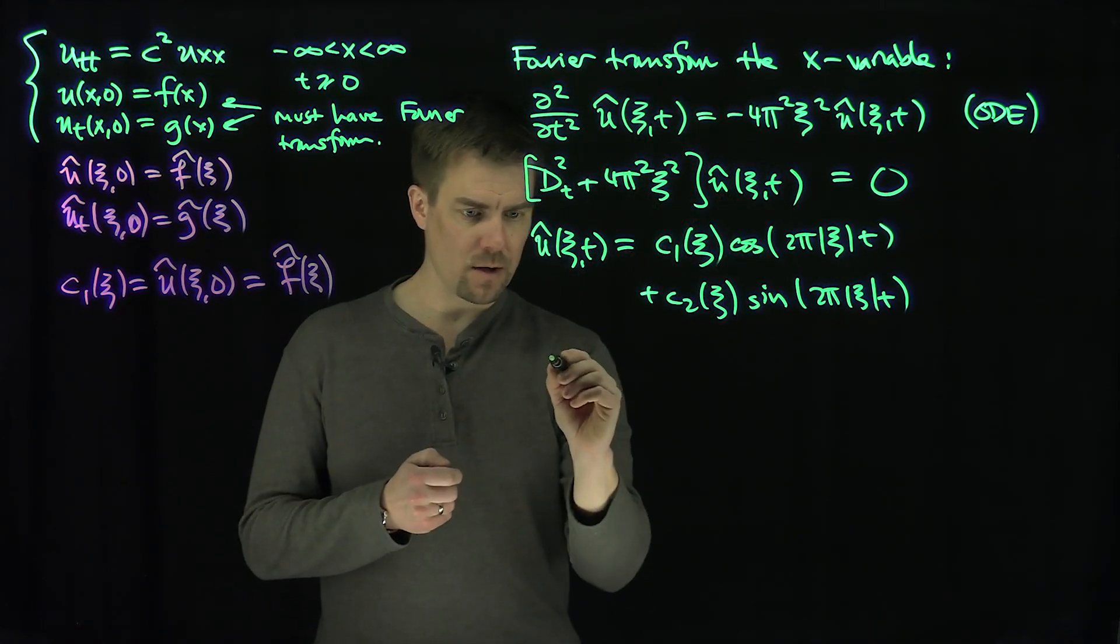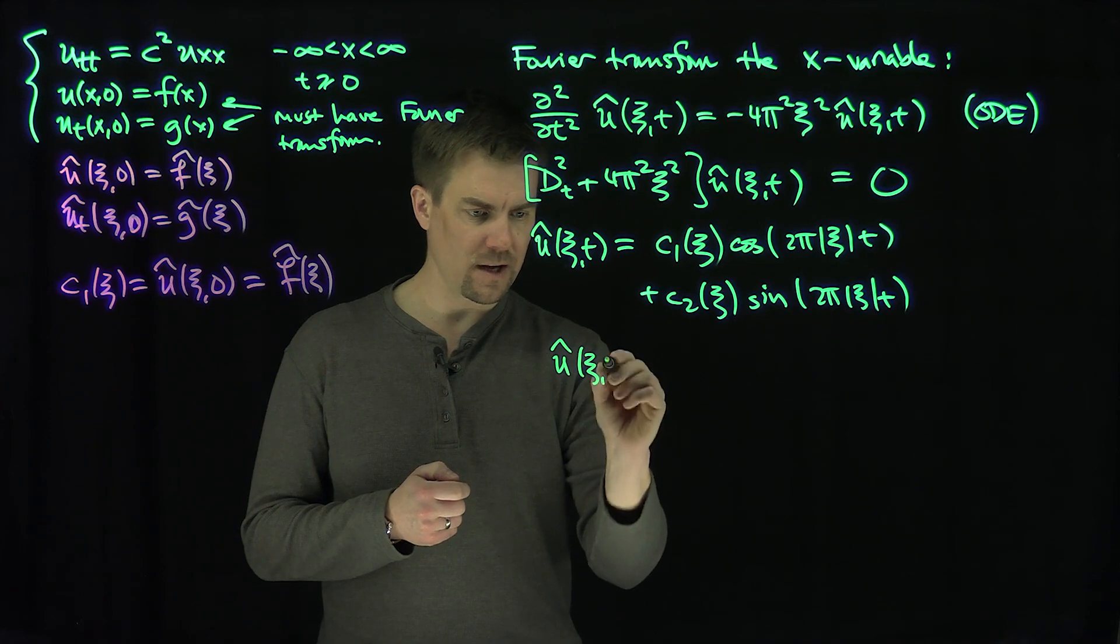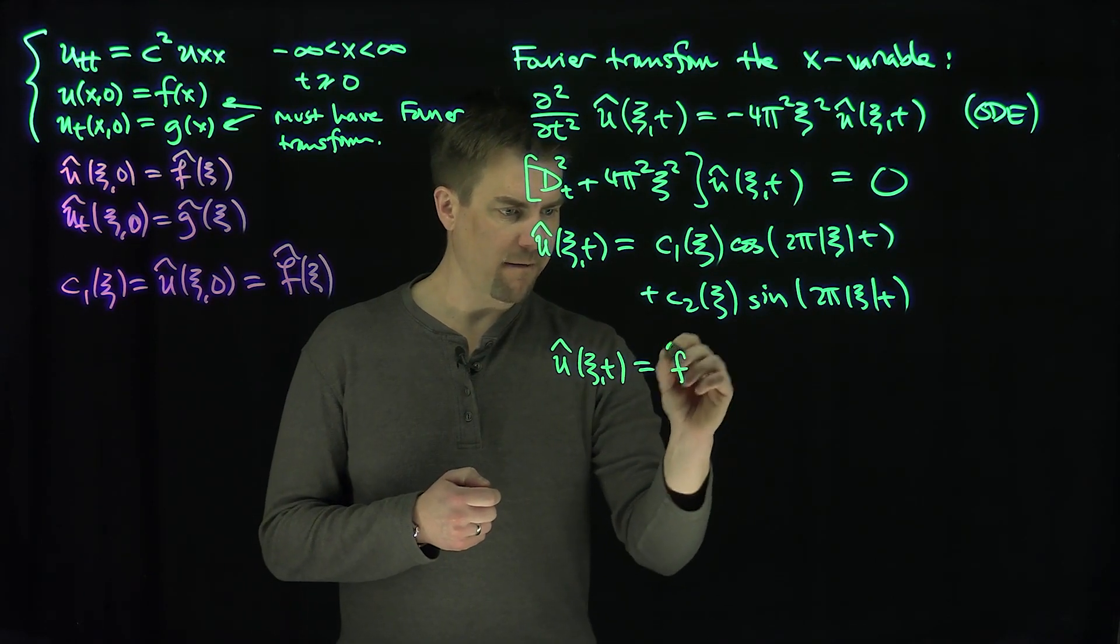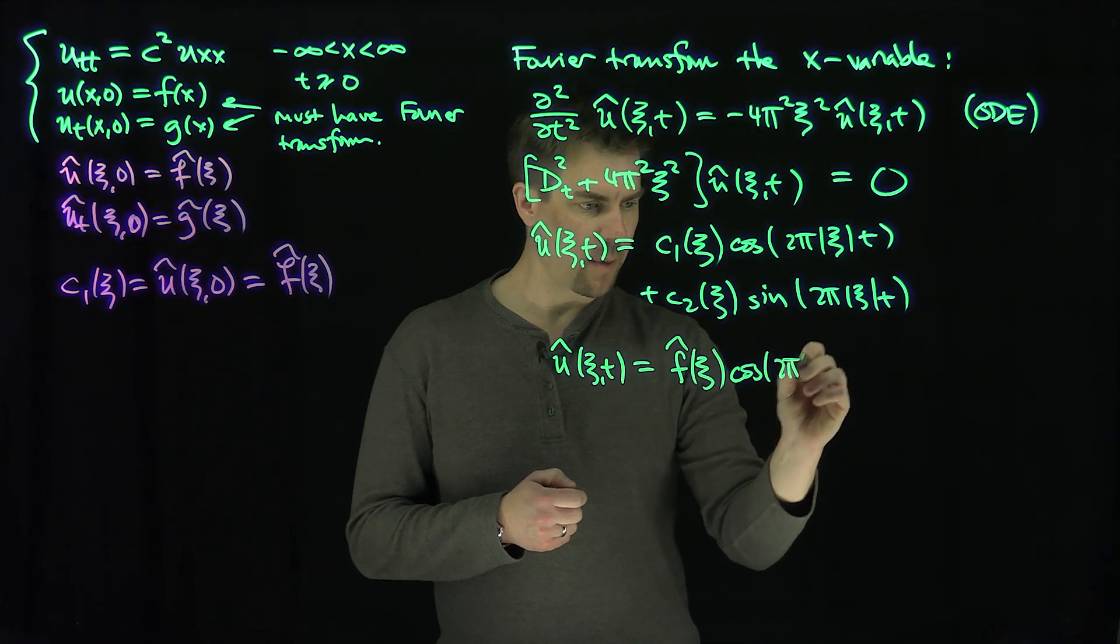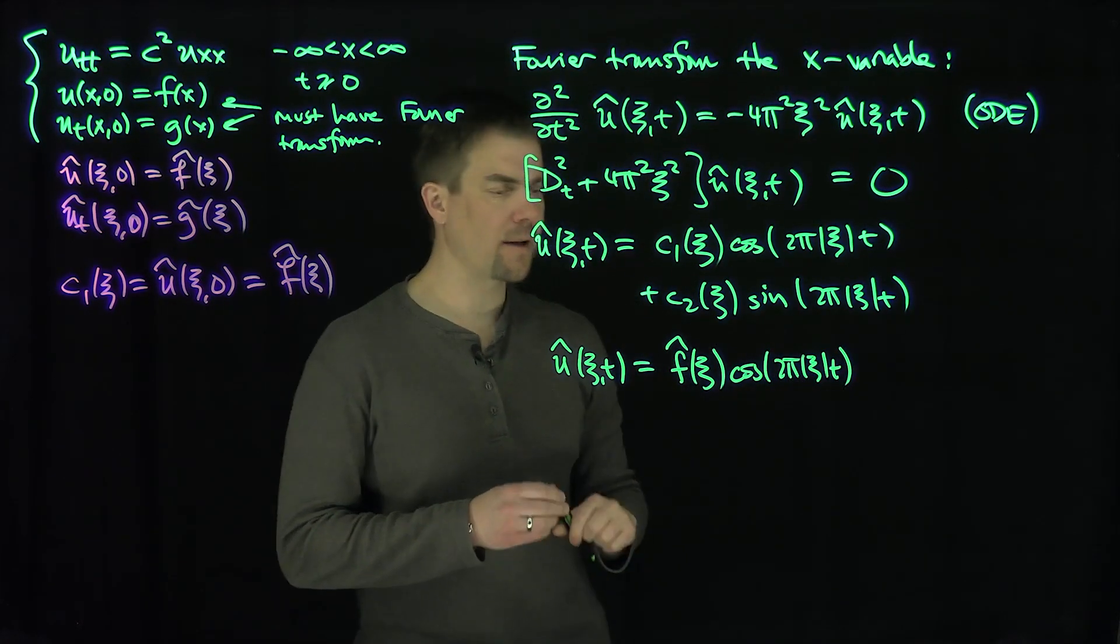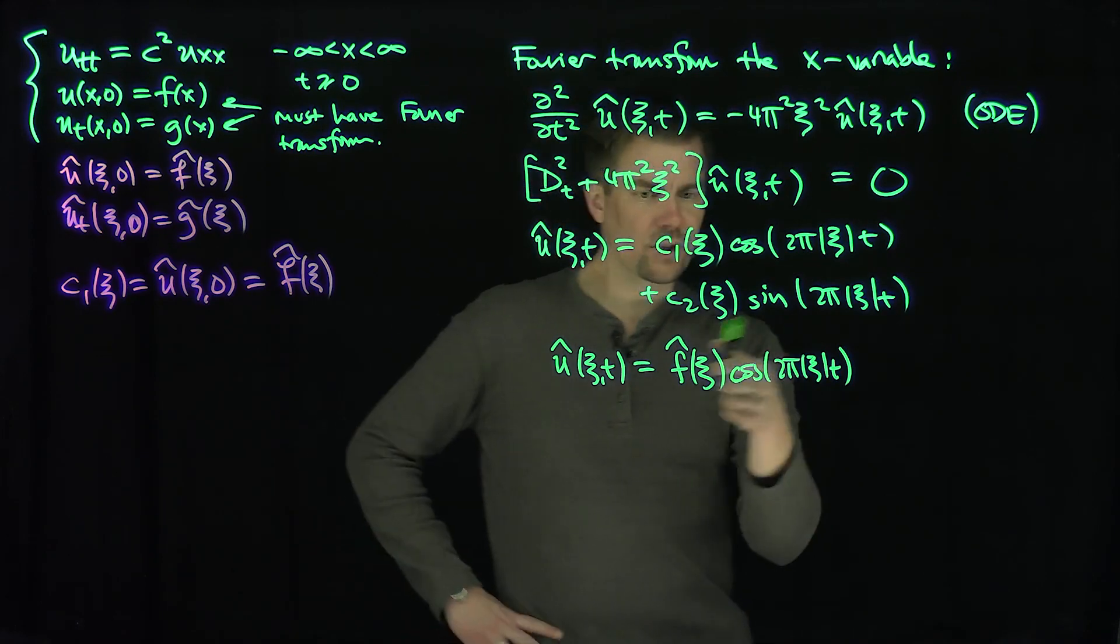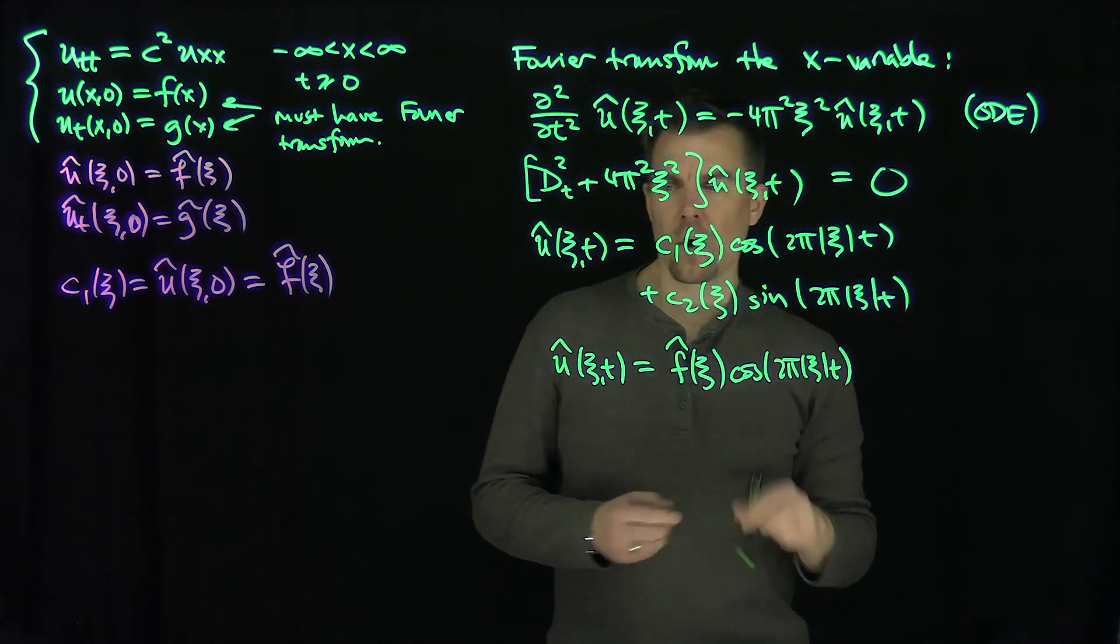So my u hat of xc is going to be u hat of xc t is going to be f hat of xc cosine of 2 pi modulus xc t, like that. And the question is, what's this c2 going to be?